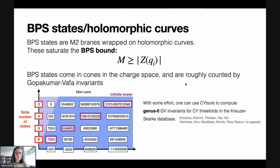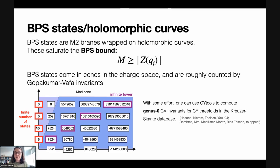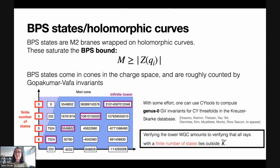There are two features to point out in this collection of GV invariants. First, there are rays like this purple one which have a non-zero GV invariant at every single site — these host an infinite tower of BPS states. Second, there are rays like this red one with only a finite number of states: along this ray there's a GV invariant of 6 at charge site (0,1), but it's zero forever after. Verifying the tower weak gravity conjecture amounts to verifying that all rays with only a finite number of states lie outside the cone K tilde.